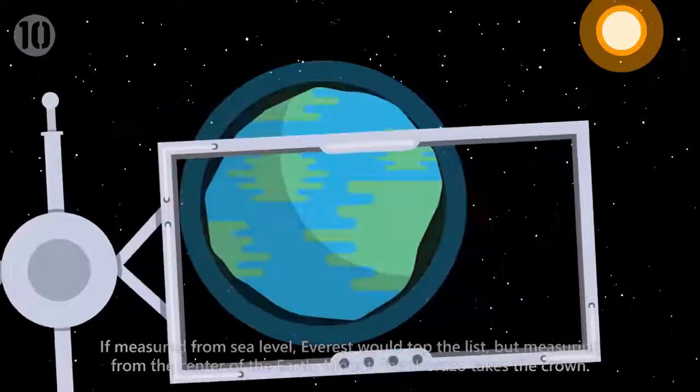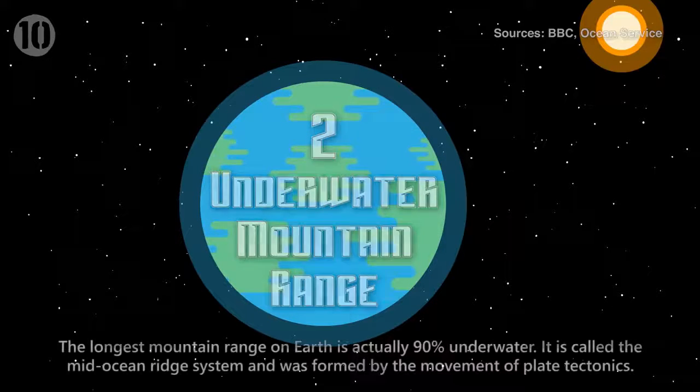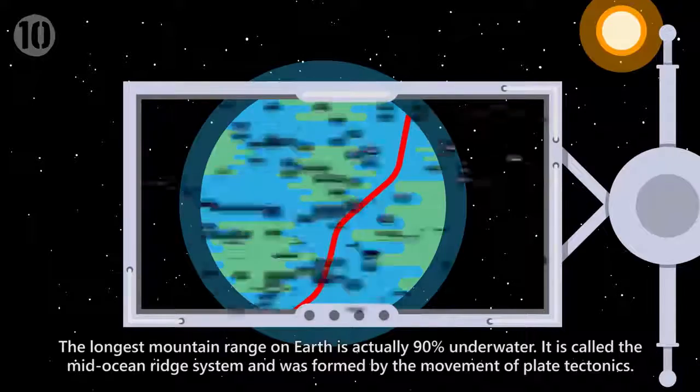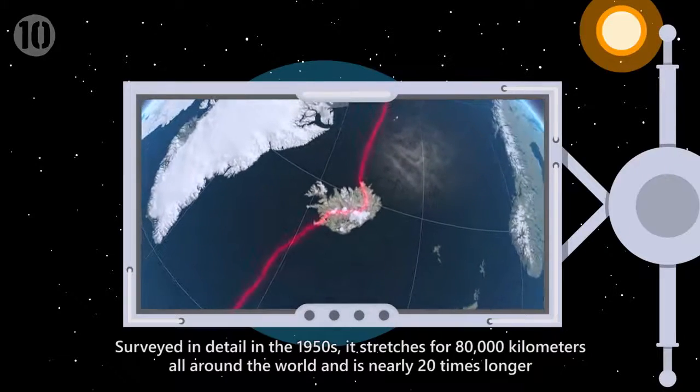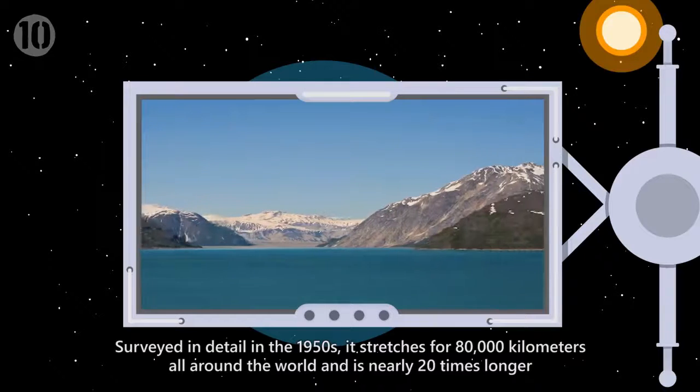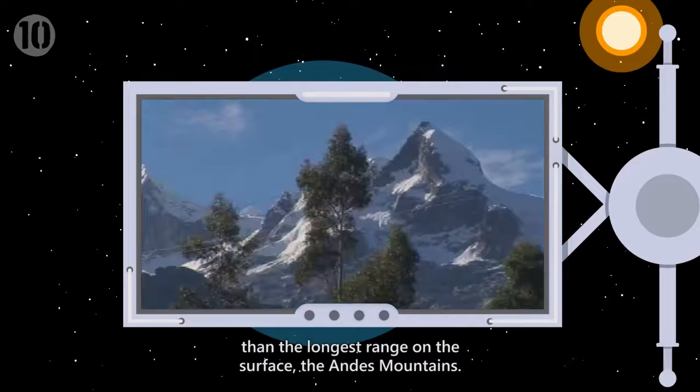Number 2: Underwater Mountain Range. The longest mountain range on Earth is actually 90% underwater. It is called the mid-ocean ridge system and was formed by the movement of plate tectonics. Surveyed in detail in the 1950s, it stretches for 80,000 kilometres all around the world and is nearly 20 times longer than the longest range on the surface, the Andes Mountains.